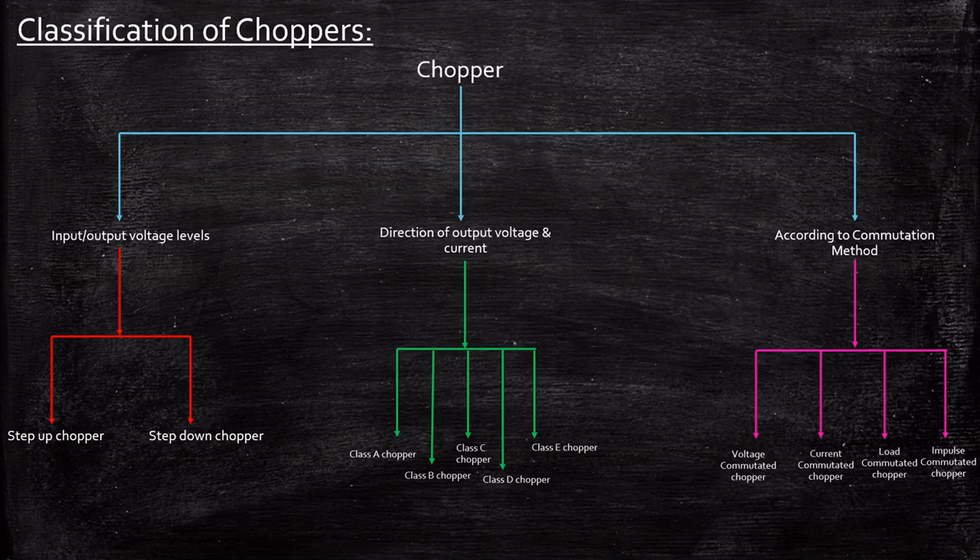On a high level, classifications of chopper is that based on input and output voltage we have step up and step down, direction of output voltage and current we have class A to class E, and according to commutation method we have voltage, current, load and impulse commutated choppers. So this is the introduction of choppers. I hope this introduction gave you a clear overview of what choppers are about. We will be going in detail as how they operate for each of these circuits as we go further.